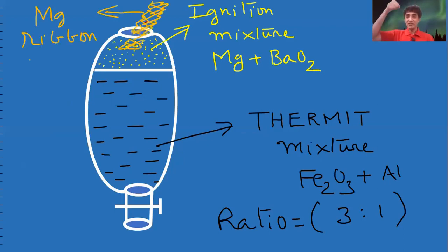In that, the magnesium ribbon is used to ignite. Take a matchbox and ignite it. Magnesium ribbon is burnt. That ignition mixture catches fire easily so that reaction takes place in the thermite mixture.